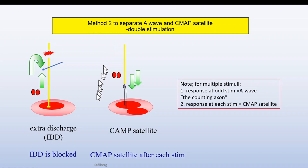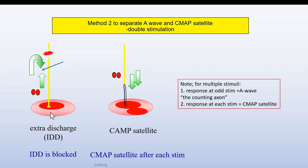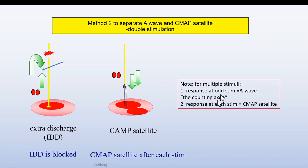Another method to separate A waves from CMAP satellites is by double stimulation. When we stimulate once, we get a late component. But if we stimulate two times with an interval of about three milliseconds, the second stimulation will block the response from the first, and we will not get any late component at all. If we give three stimuli, the coast is clear after the two first stimuli and now we can get the response. If we give four, then no response. If we give five, we get one response — the counting axon. For a CMAP satellite with double stimulation, we will get responses to both stimuli.